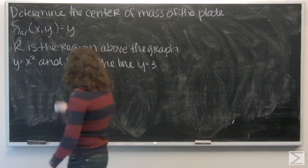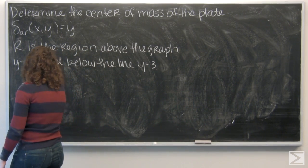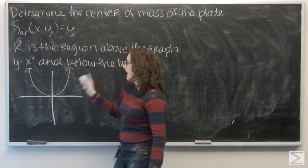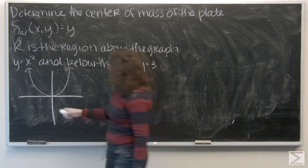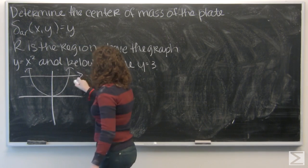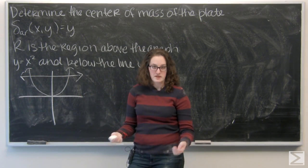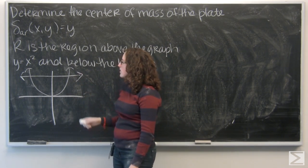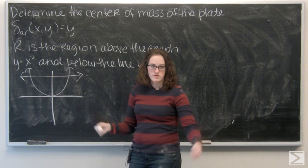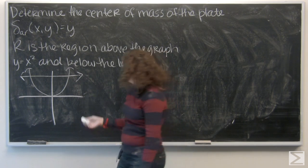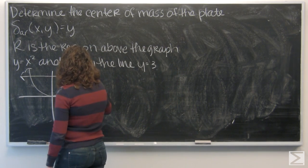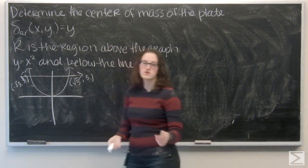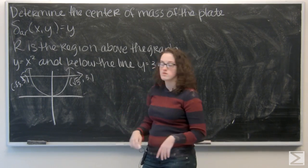Let me start by drawing that region. I have my parabola y equals x squared, and here's my line y equals 3. Let's figure out where these two intersect. Setting y equals x squared equal to 3, x has to equal the square root of 3. So my two points of intersection are negative root 3, 3 and root 3, 3.